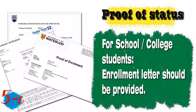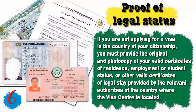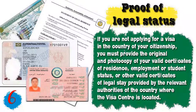Number six, for foreigners applying outside their country of citizenship, you must provide the original and a photocopy of a valid certificate of residence, employment, or student status, or other valid certificates of legal stay issued by the relevant authorities of the country where the visa center is located.